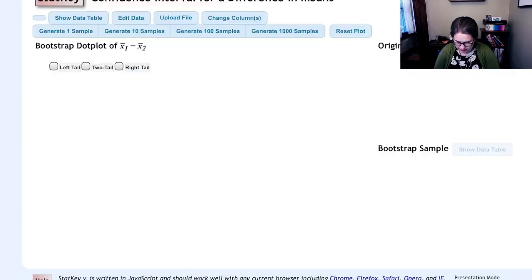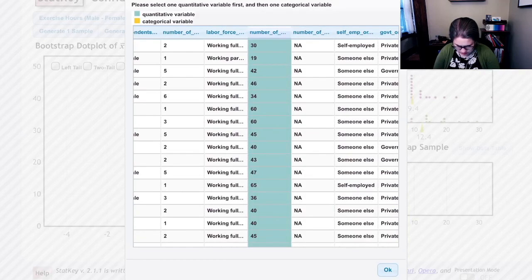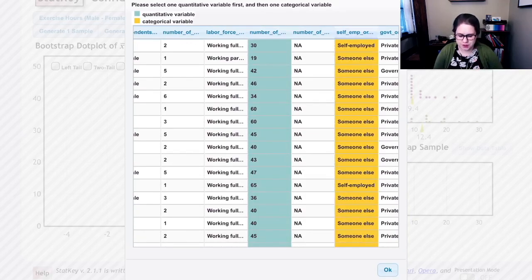I'm going to click on that link. This is data that I found myself so it's not in the dropdown. I'm going to need to upload the data and then I just select the quantitative and categorical variables.